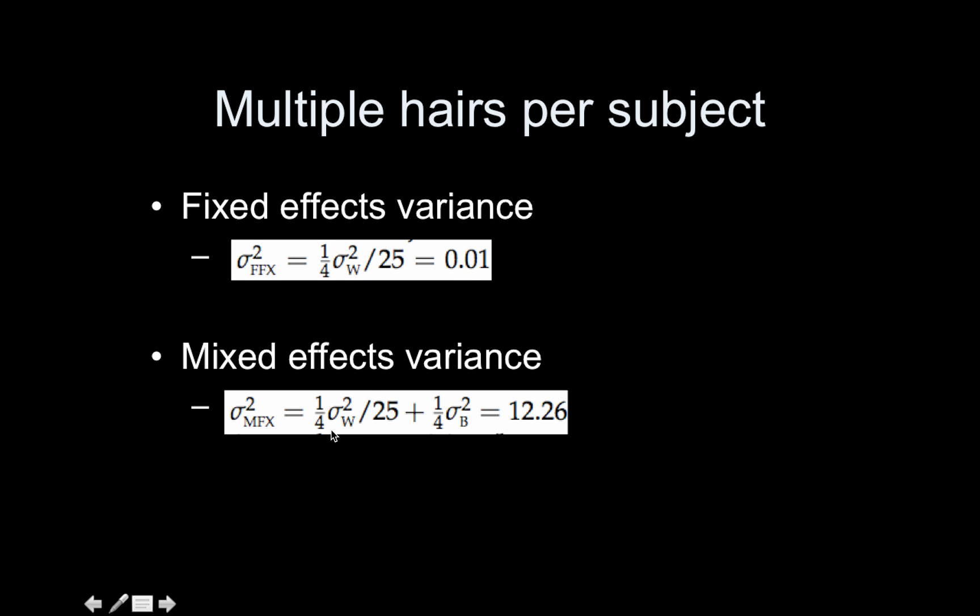The mixed effects variance, on the other hand, only this first chunk is going to reduce. Adding more hairs per subject isn't going to reduce the between subject variance. So it just went to 12.26.